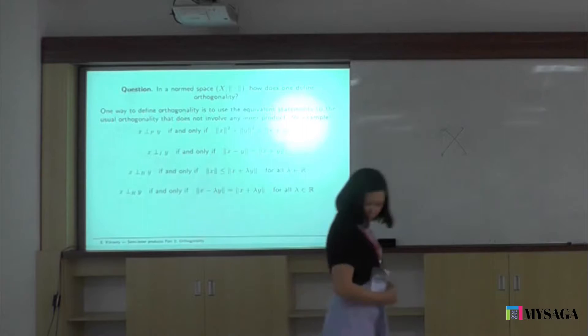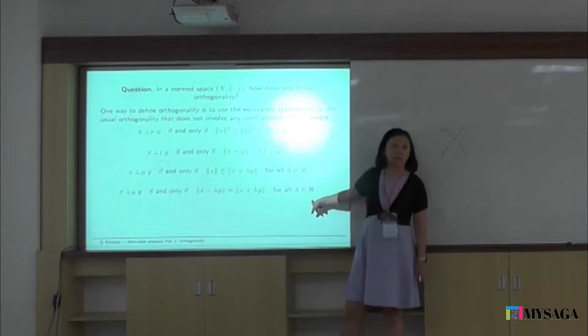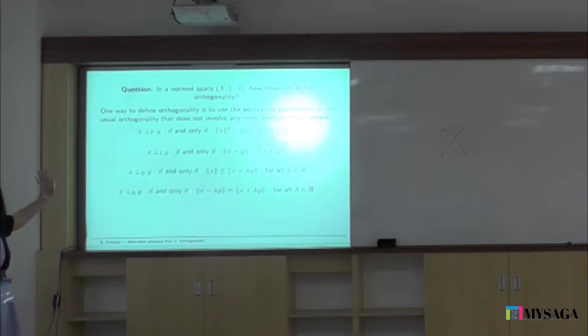This one is called Roberts orthogonality, introduced by Roberts. You can see this is kind of similar to isosceles orthogonality, but a lot stronger — there's lambda and there's 'for all lambda.' So those are four things I'll introduce today. There are all sorts of ways of introducing more, but let's just get some taste. Homework: in any inner product space, show that these are actually equivalent statements.